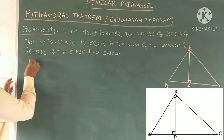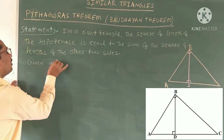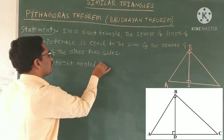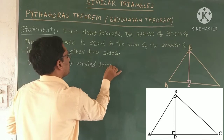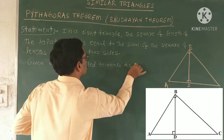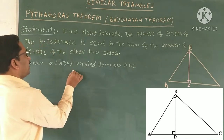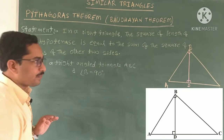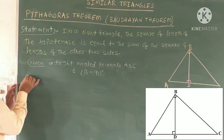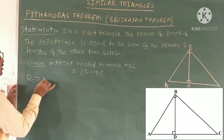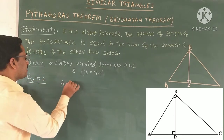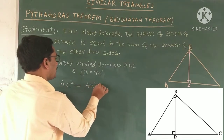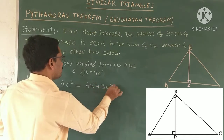Write the given data. Given: right angle triangle ABC with angle B equal to 90 degrees. Required to prove: AC² = AB² + BC², meaning the hypotenuse square equals the sum of the squares of the remaining two sides.